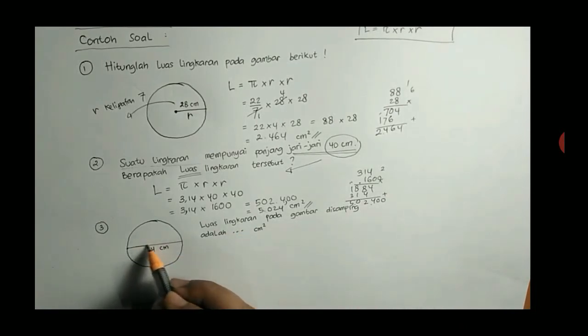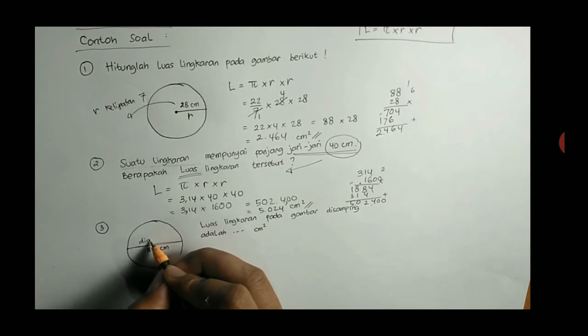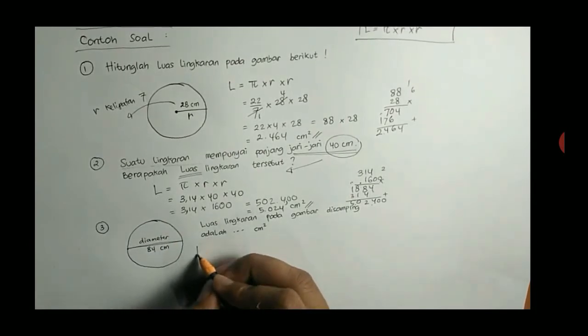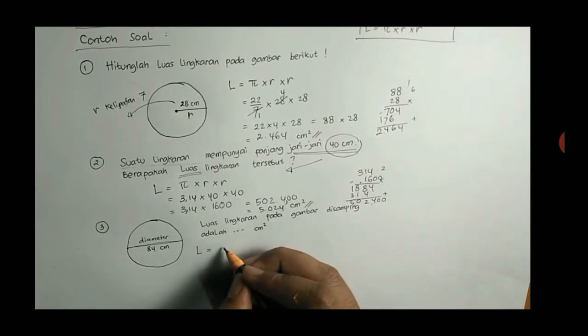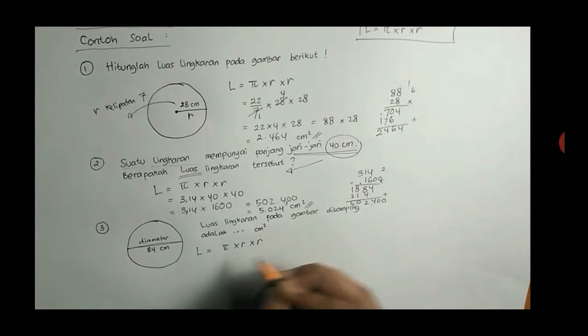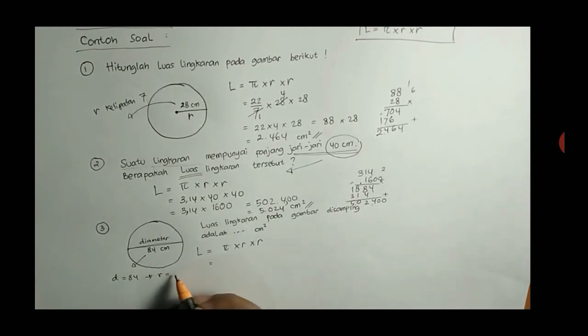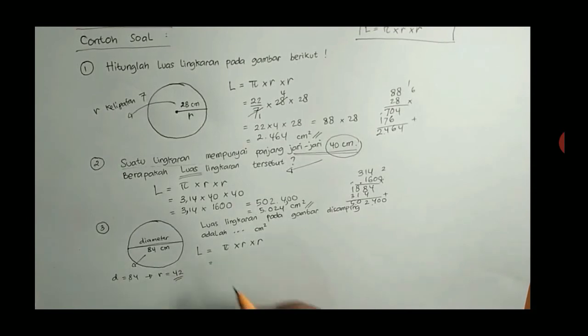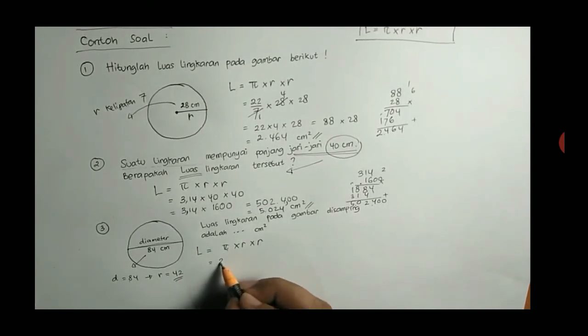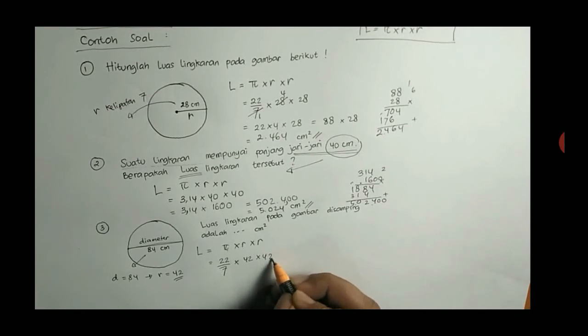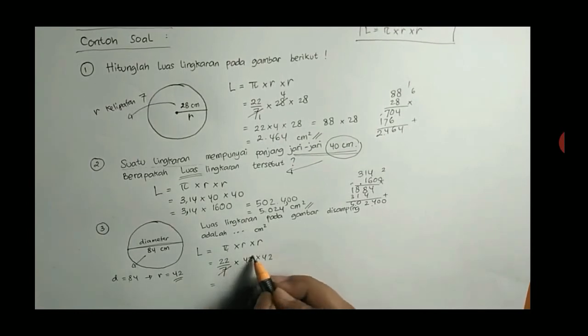Dipelajari pelan-pelan, sekarang nomor 3. Nomor 3 ada gambar seperti itu, lingkaran. Itu bukan jari-jari, itu adalah diameter karena garis dari tepi ke tepi. Jadi hati-hati itu yang diketahui bukan jari-jari tapi diameter. Jari-jarinya berapa? Yang di pembahasan tadi, jari-jarinya setengahnya diameter. Kalau diameternya 84, berarti jari-jarinya adalah 84 bagi 2 atau 42 berarti. Kita kembalikan ke rumus P dikali R kali R. Sehingga karena 42 ini kelipatan 7 berarti gunakan P 22 per 7. 42 kali 42. Ini sederhanakan bagi 7, 1, bagi 7, 42 bagi 7, 6. 22 dikali 6 dikali 42.